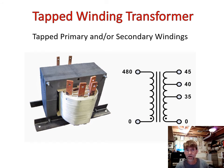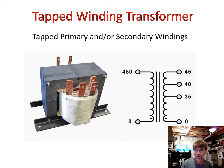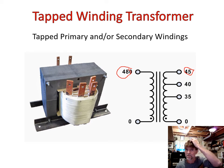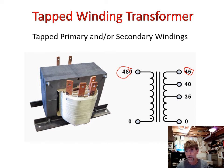This diagram shows a tapped secondary — it could be a tapped primary. All we need to understand the voltage outputs is the turns ratio. This is a step-down transformer: the primary is 480 volts, and if the secondary were 48 volts the turns ratio would be 10 to 1. Since it's 45 volts, it's stepping down slightly more than 10 times.